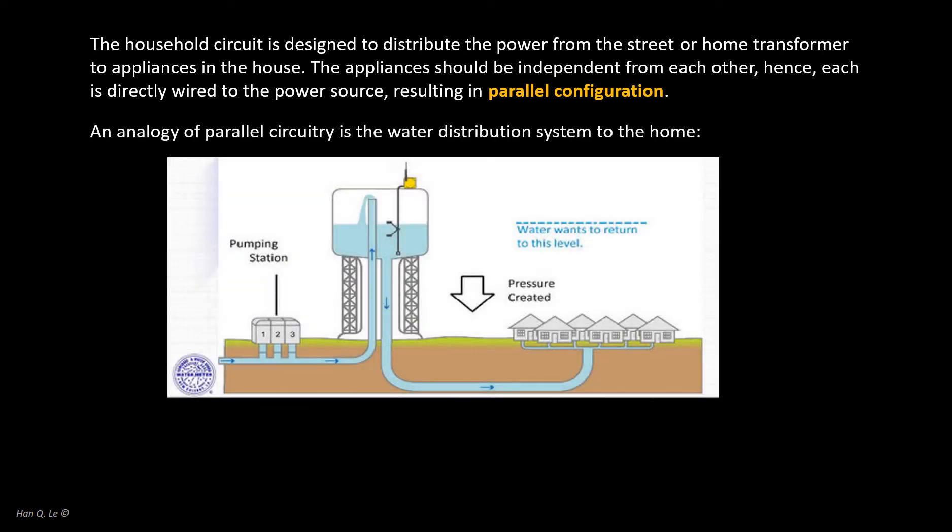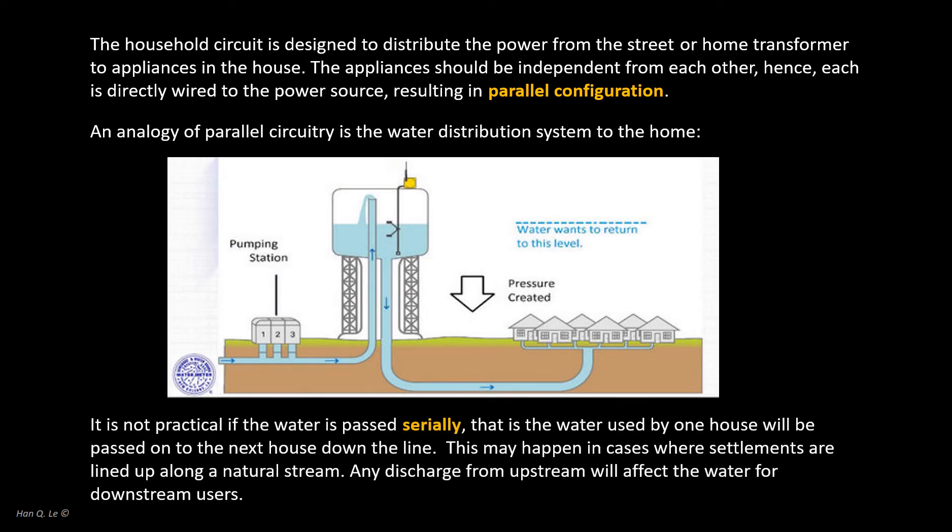Consider this analogy between electricity distribution and water distribution for household. From a reservoir, a big pipe carries water to a street or settlement. But from the main pipe, each household taps in parallel, not serially. If the water distribution were serial, then the water from one house usage would be recycled and passed down to the next house. And if one house upstream has blockage, the downstream houses will not have water.